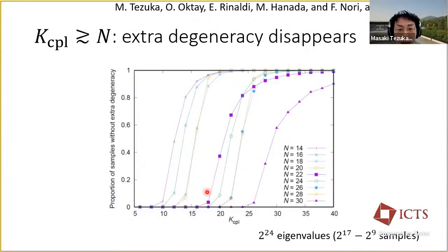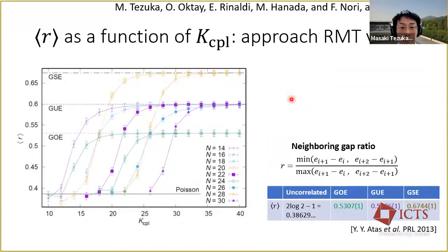As a function of the number of couplings, K_cpl, in the horizontal axis, we have plotted the observed proportion of samples without extra degeneracy. We observe a clear n-modulo-8 pattern, and if this K_cpl exceeds the number of fermions n, over half of the samples do not have extra degeneracy. For samples without extra degeneracy, we have plotted the average of the neighboring gap ratio, and we observe that it rapidly approaches the random matrix value after K_cpl equals n. For example, for n equals 24, we approach GOE, then 26, GOE, 28, GSE, and 30, GOE again.